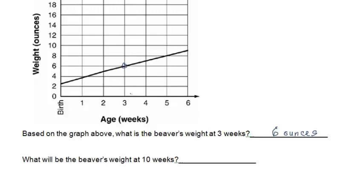Let's look and see. At one week, the beaver weighed about four ounces. At two weeks, it weighed five ounces. At three weeks, it weighed six ounces. So this graph is actually pretty simple. It lets us know that every week, the beaver grows about one ounce.